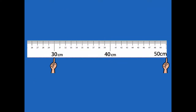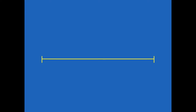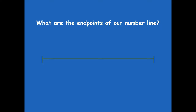All right, friends — let me model this for you. I zoomed in on our meter strip so it'd be easier to see. Here is still 30 and 50. Here are my hash marks for the end points, and then I'm going to connect them with a ruler. You should have a line that looks similar to this. Let's label our hash marks — what are the end points of our number line? We've got 30 centimeters and 50 centimeters, so here I would label 30 and 50.